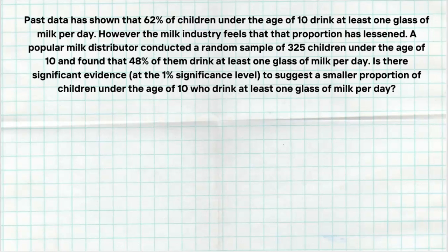All right, so as I mentioned, we have a thought to be true population proportion of 62%. And we have this theory, this belief that maybe it's lessened. So what are the values that we need to actually conduct the test? As I mentioned, we need P sub 0. P sub 0 is going to be our thought to be true population proportion, and that is 62%. The next thing we need is our sample size. That's 325 children under the age of 10. And then we need P hat. What was our sample proportion? Our sample proportion was 0.48.